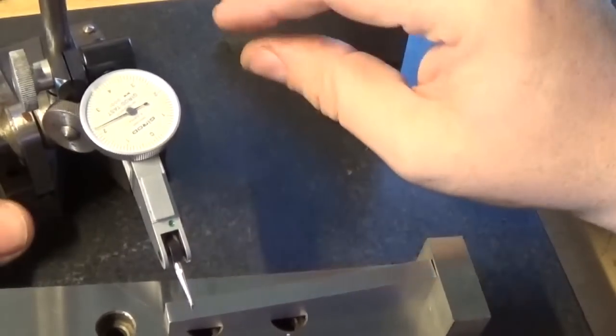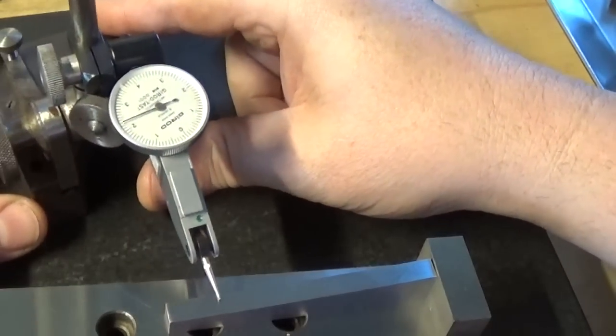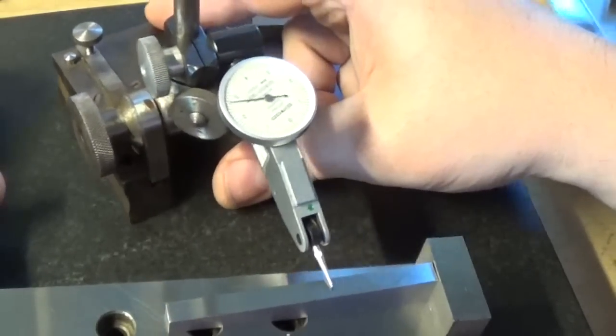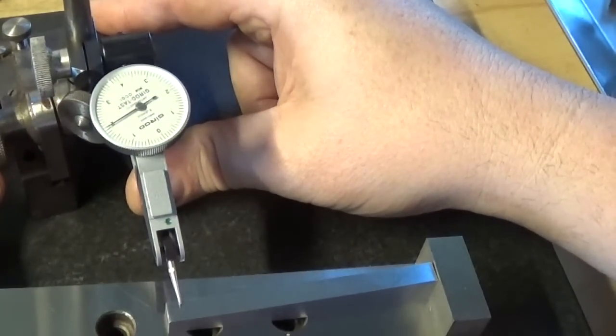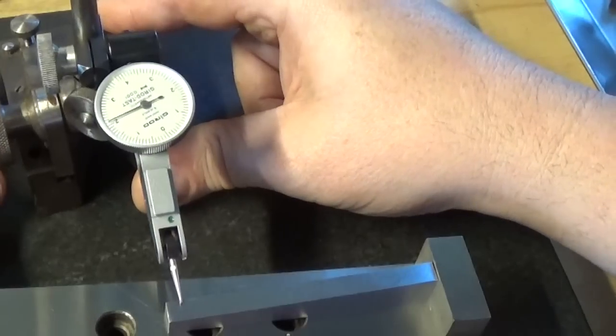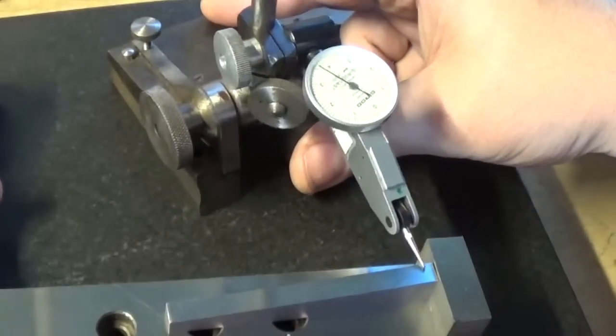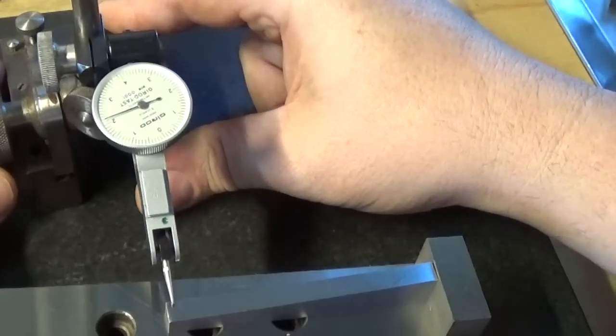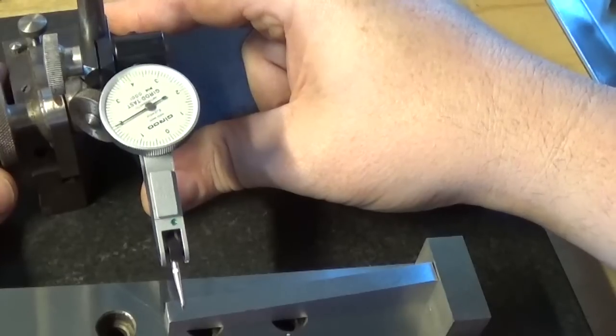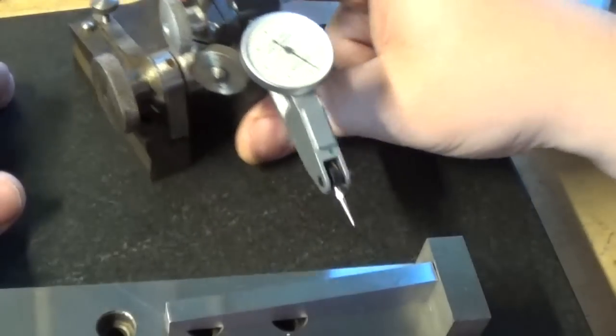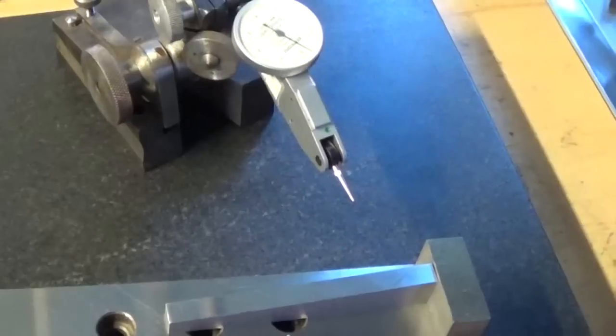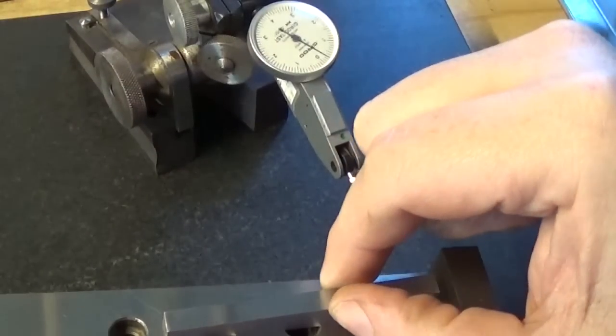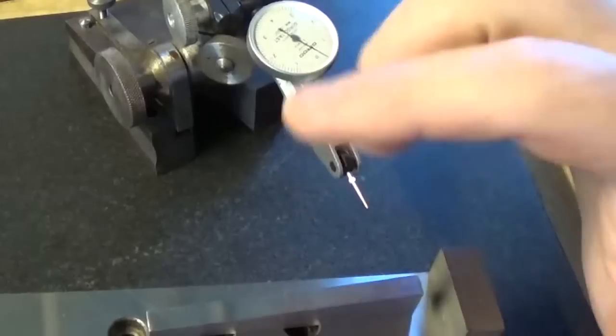So I've gone right through them and this one seems to be the worst one, this is the 5 degree one. I'm sitting on 4 thou there and about 2 thou there, so that one's out. 3.8, 2.4, so that one's out about 1.4 thou over the length. Now it's over 3 inches. If we work that out, if we do the math, that's out about 2.4 minutes on the circle, so it's not far and that's the worst one.